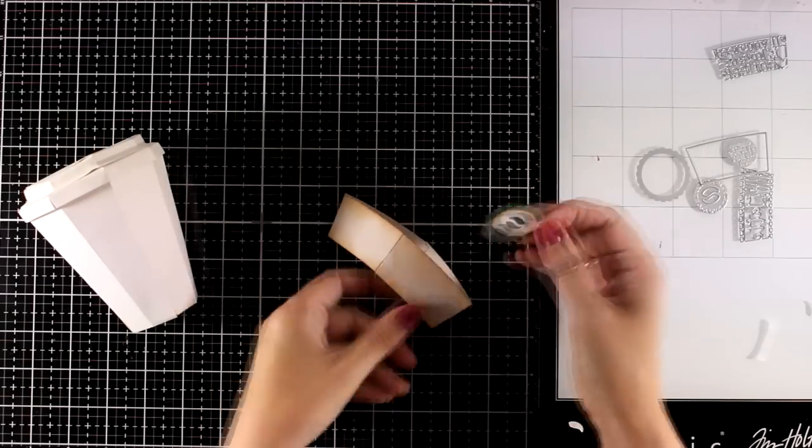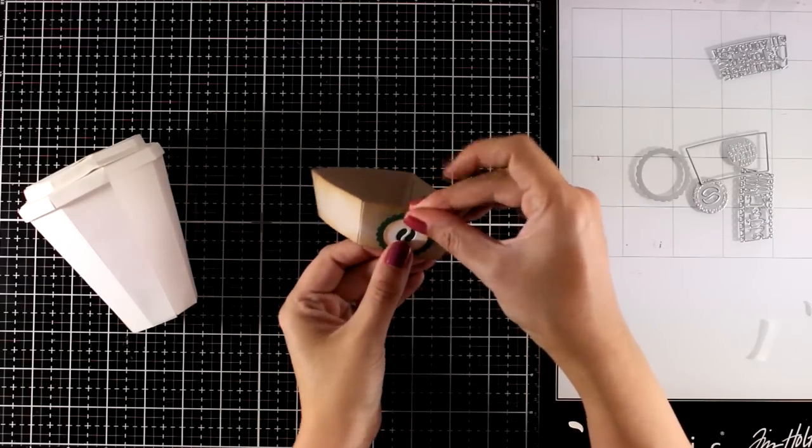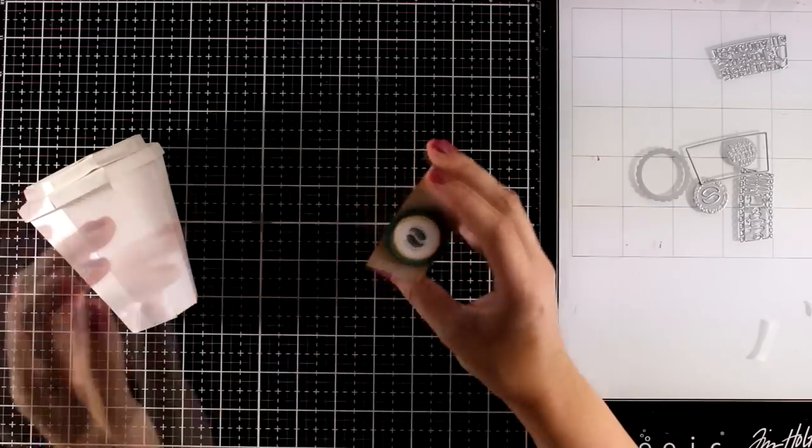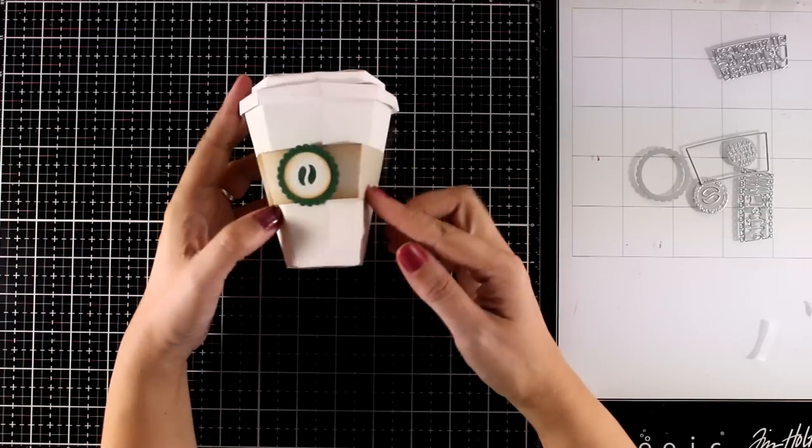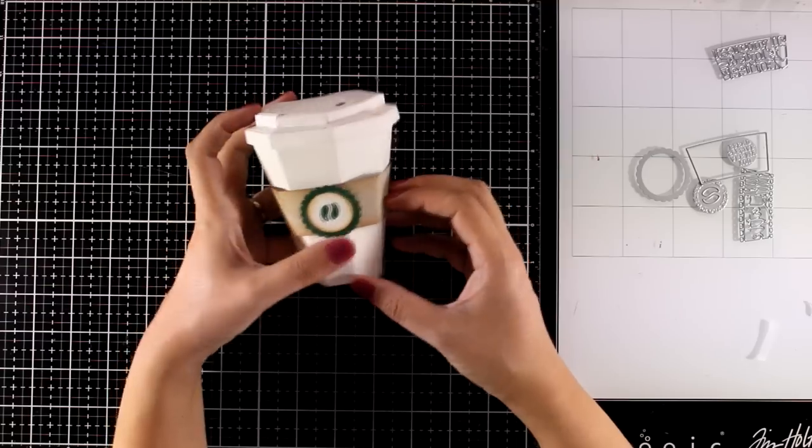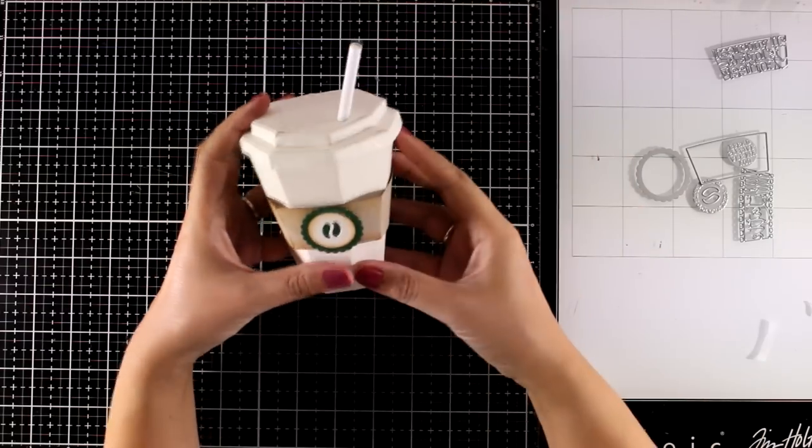So for the first white cup I went clean and simple. All I did was to combine dies from the kit in greens and whites. And I'm going to keep it like that. Just traditional coffee cup with a straw inside.